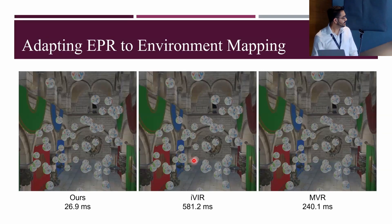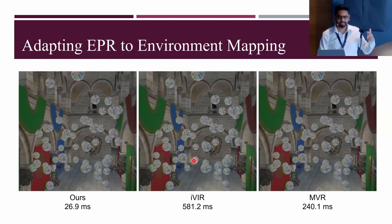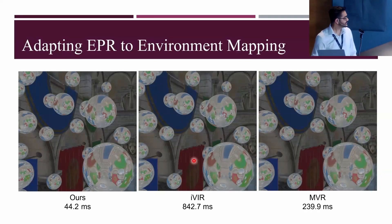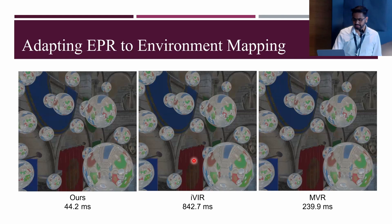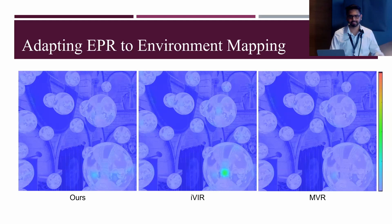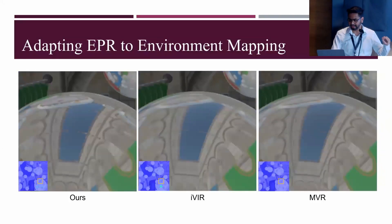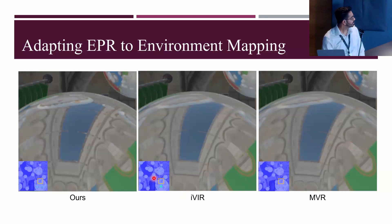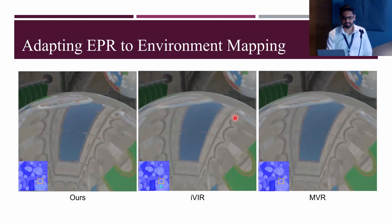Testing on the sponsor scene on an RTX 3070 GPU: our method took 27ms, IVIR took 580ms, and MVR took 240ms. In close-up view: EPR takes 44ms, IVIR 840ms, MVR still 240ms. The perceptual difference comparison against MVR at 4x resolution shows warmer colors for more noticeable differences. Our EPR technique preserves details like flag holes and sphere edges, which get washed out in IVR and MVR due to MIP mapping.